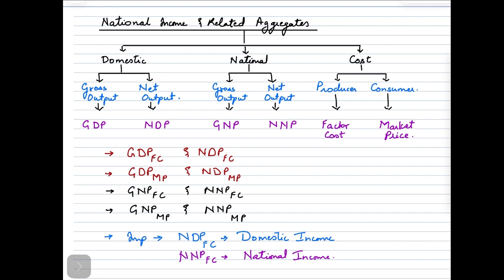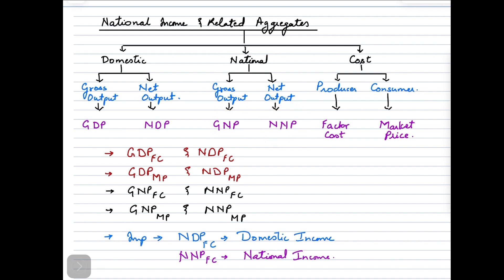When we talk about the national component, we again have the gross and the net. The only difference is it is produced by the residents of the country irrespective of where they are located. So gross national product represents the total market value of all production done by Indian residents irrespective of where they are located, and net national product is the net market value of all final goods and services produced by Indian residents, again irrespective of where they are located.